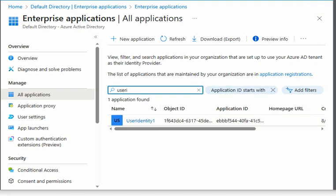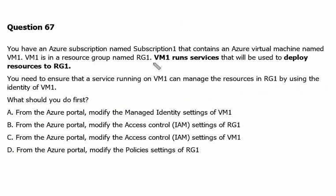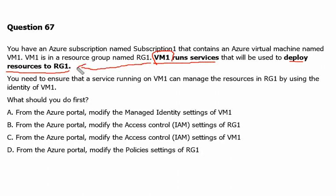Let's go back to the question. As per our question, VM1 runs a service that deploys resources in Resource Group 1. Therefore, VM1 shall have an identity associated with it, and that identity will perform resource deployment on Resource Group 1. If we provide an identity to VM1, it will do the job.